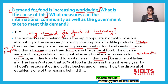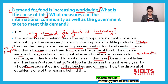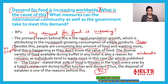The example should always be related to either of the two reasons. An article published in The Times stated that 20% of food is thrown in the trash every year by a hotel's restaurant during buffet lunches and dinners. 20% of food is a huge quantity that is getting wasted during buffet lunches. By doing this, I am strengthening my idea and my reason with the help of this example.